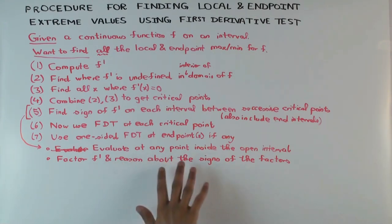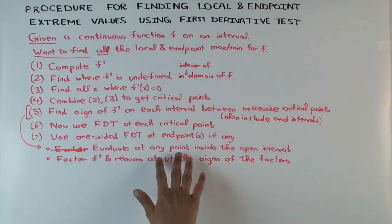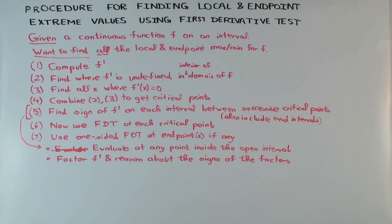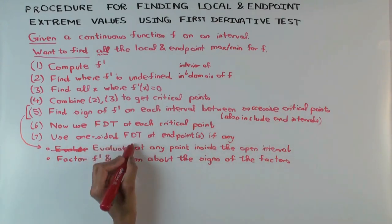If the factoring approach isn't working — if it's not a polynomial or it's something complicated — you can always evaluate at a test point. Remember, you're not evaluating F; you're evaluating F prime at a point inside the interval to determine its sign there.